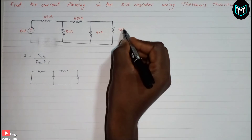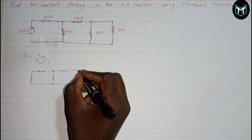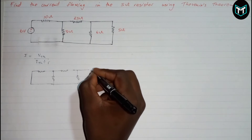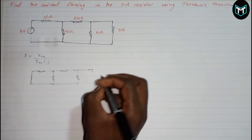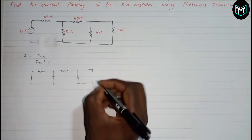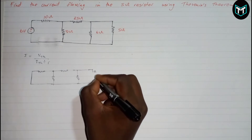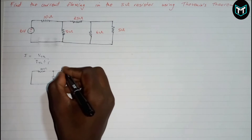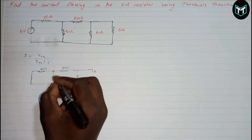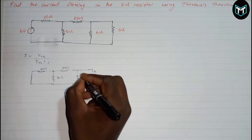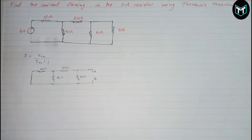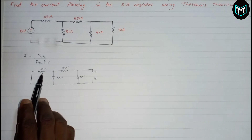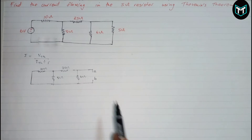Now what we're going to do is remove this 5 ohm resistor, which is called the load resistor, and just have the terminals here. I'm going to put terminal A and terminal B. So we have a 10 ohm resistor, a 25 ohm resistor, an 8 ohm resistor, and a 6 ohm resistor. Now I want to calculate the Thevenin resistance.